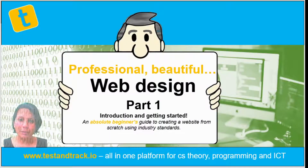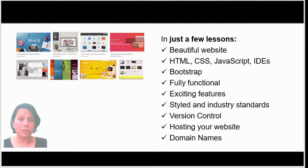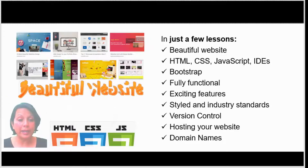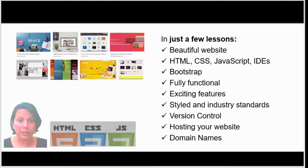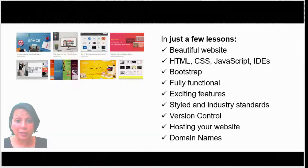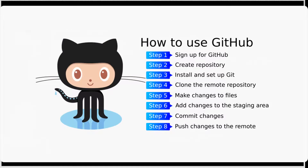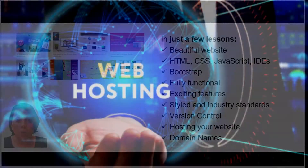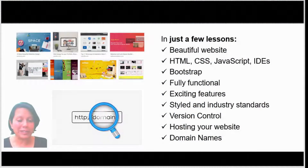Welcome to part one of this web design series where we're going to be making a complete website from start to finish using industry standards. In just a few lessons, you're going to have a beautiful website. We'll be using HTML, CSS, JavaScript, and an appropriate IDE. We'll also look at Bootstrap. It'll be fully functional with exciting features, styled with industry standards, and we'll also look at Git and version control. I'll also show you how to host your website and even get a free domain name.